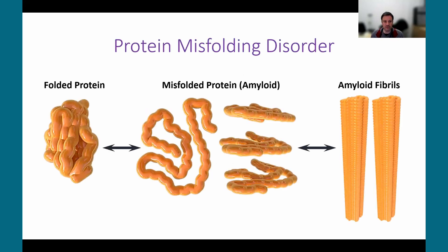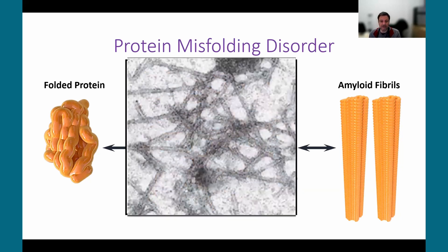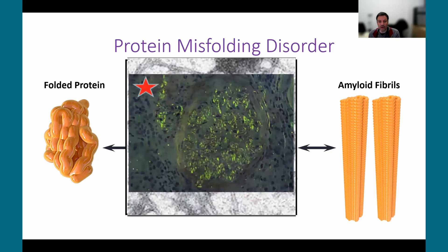Amyloidosis is a protein misfolding disorder. Normally, our proteins are in a three-dimensional folded shape, and due to various issues, they can pathologically misfold into more linear structures that accumulate and aggregate into rigid, non-branching amyloid fibrils, which deposit in tissues and organs causing dysfunction. Under electron microscopy they look indistinguishable regardless of the precursor protein, and when stained with Congo red and visualized under polarized microscopy, you get this apple-green birefringent pattern diagnostic of amyloidosis.